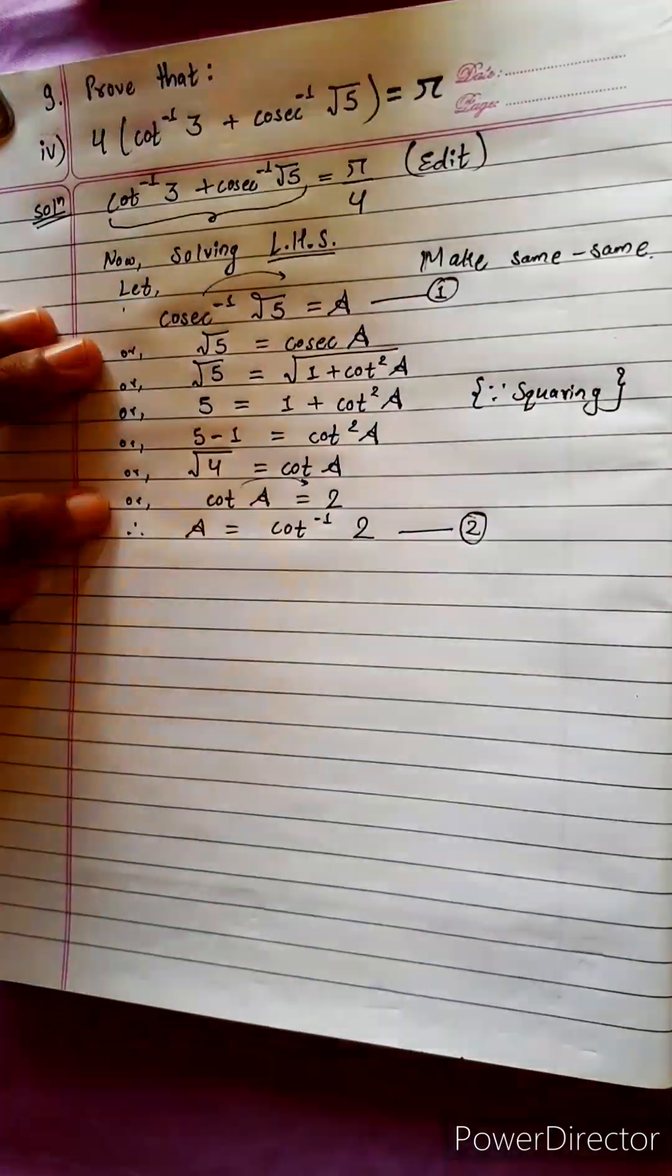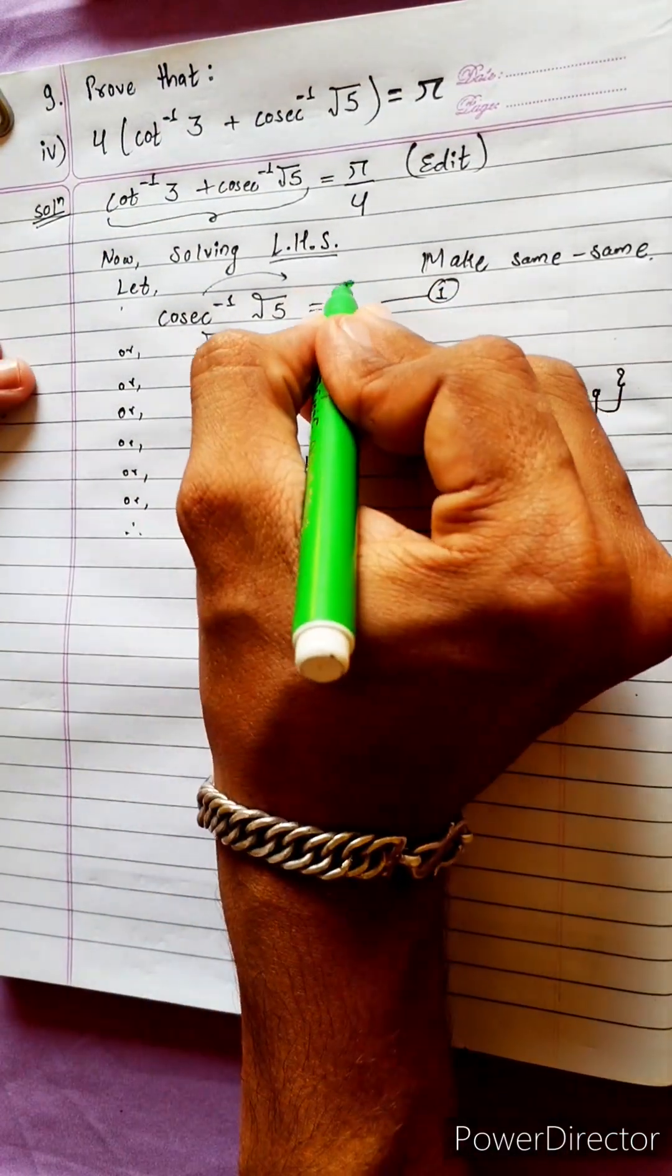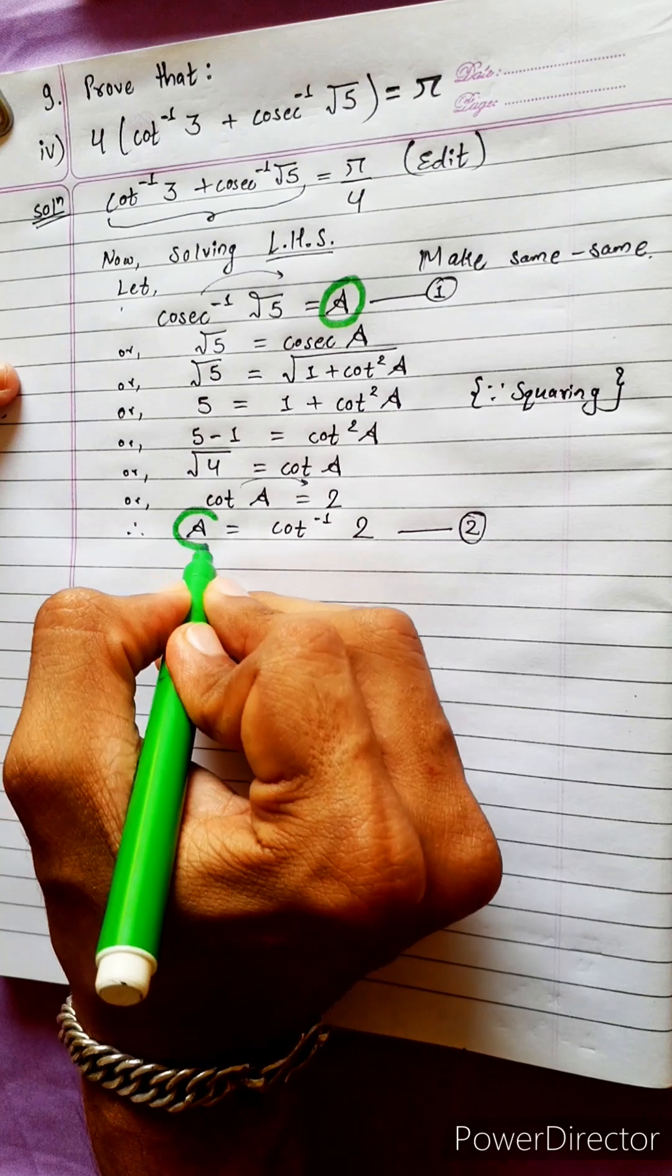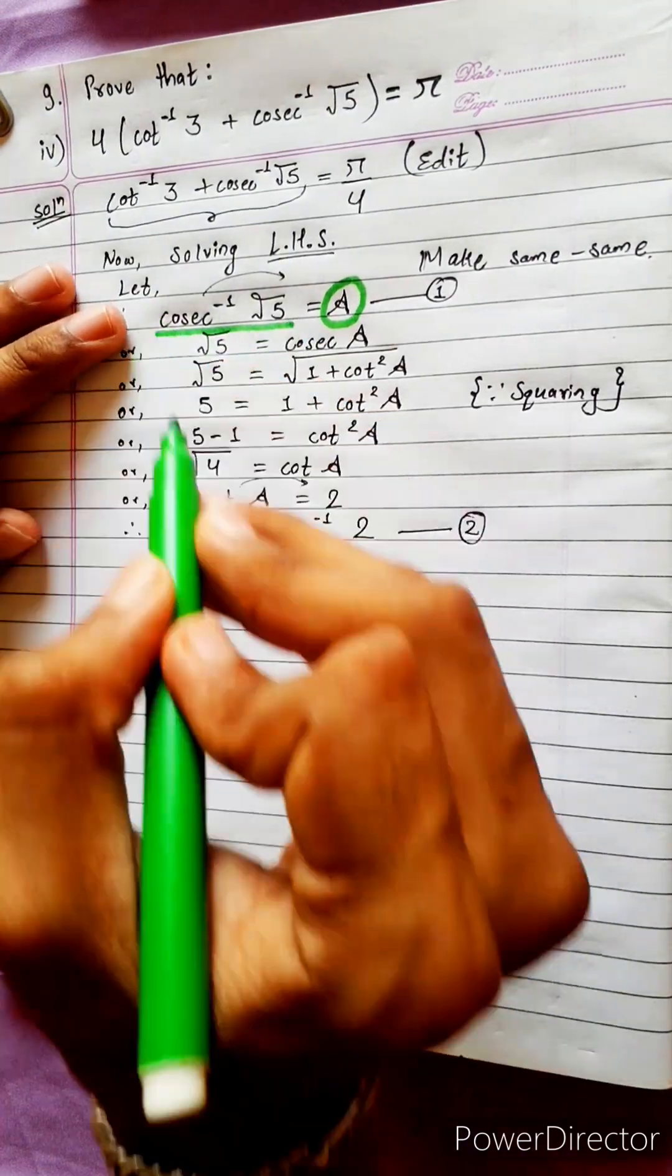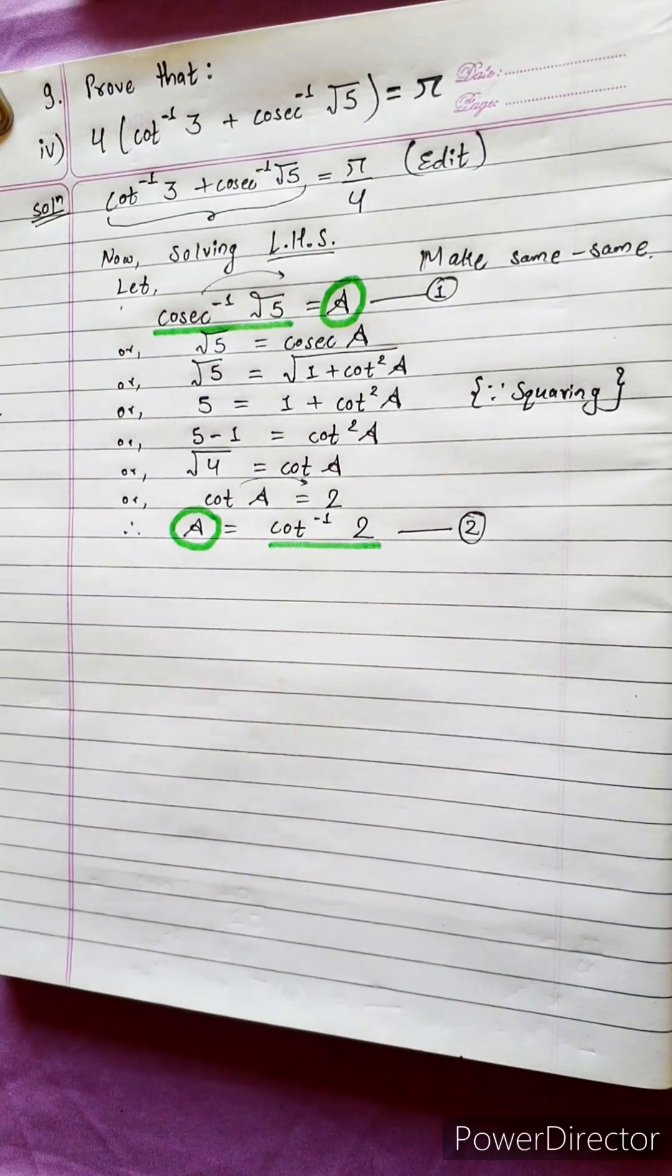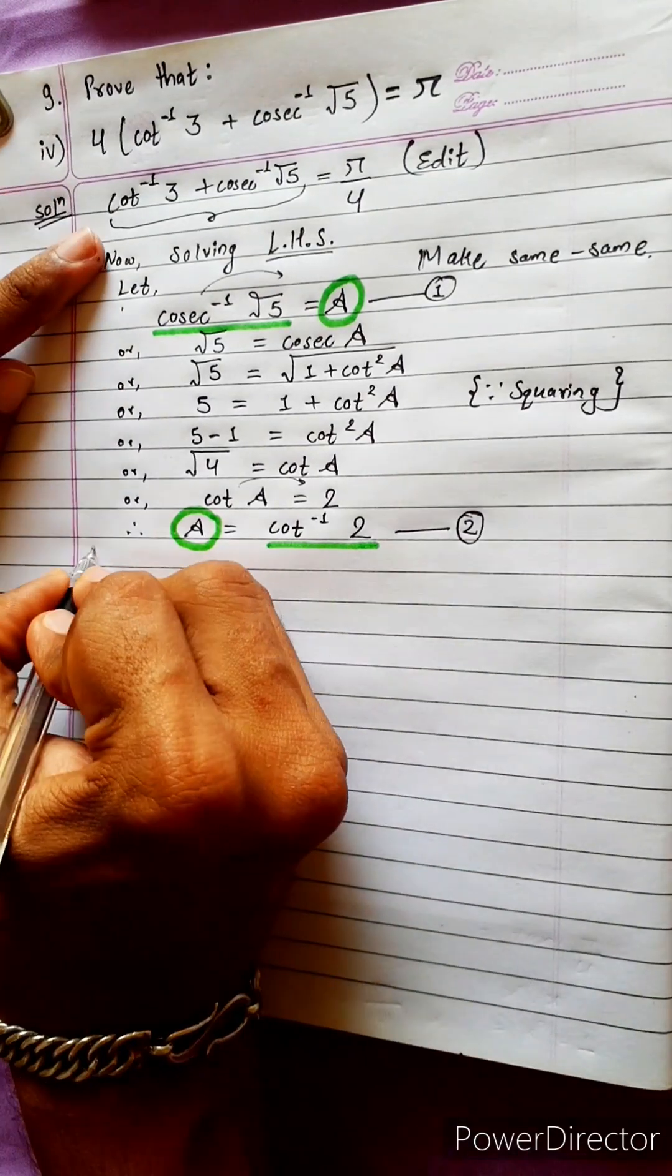Comparing equation 1 and 2. What similarity we get is, it is also A. There is also A. Both are the value of A. It means, cosec inverse something is cot inverse something. Now, what to do?